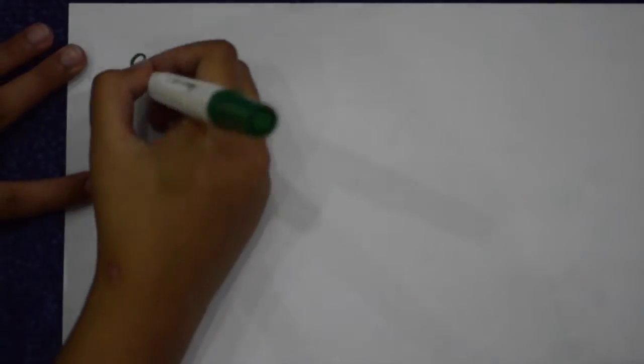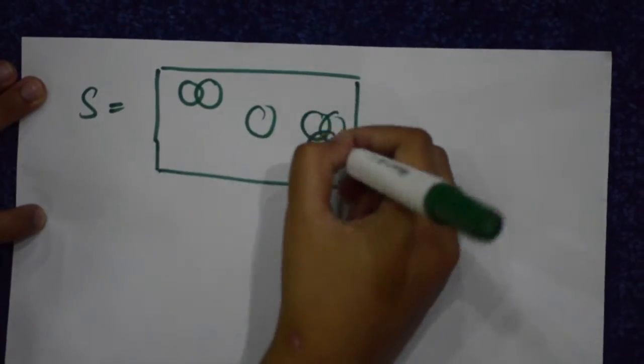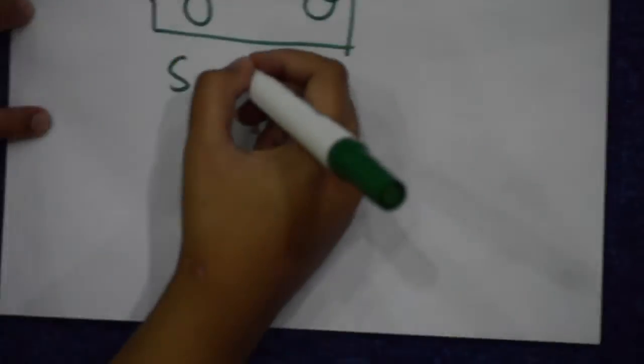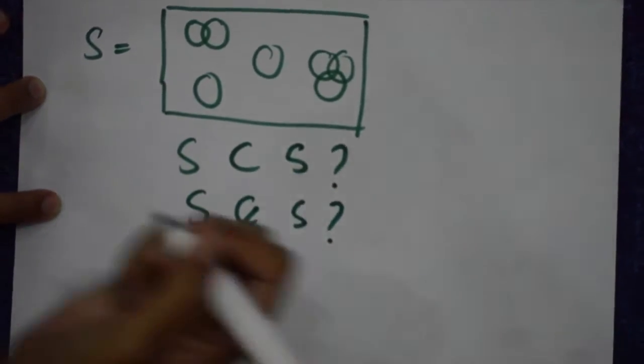Let S be the set of all sets that do not contain themselves. Is S a member of S then? But S only contains the sets that do not contain themselves. So, S is not a member of S.